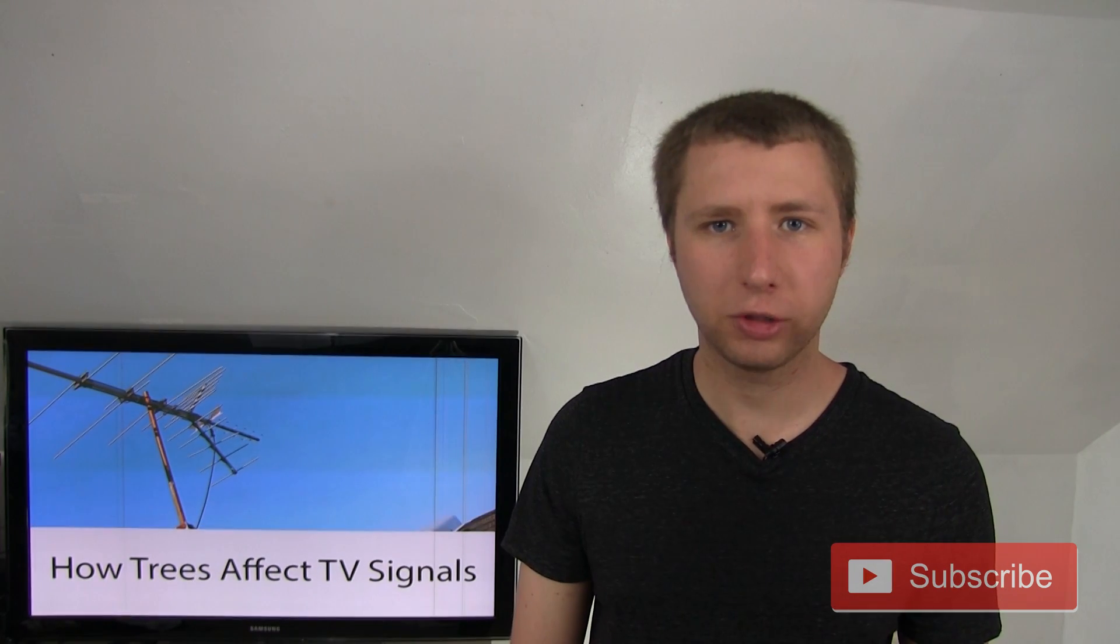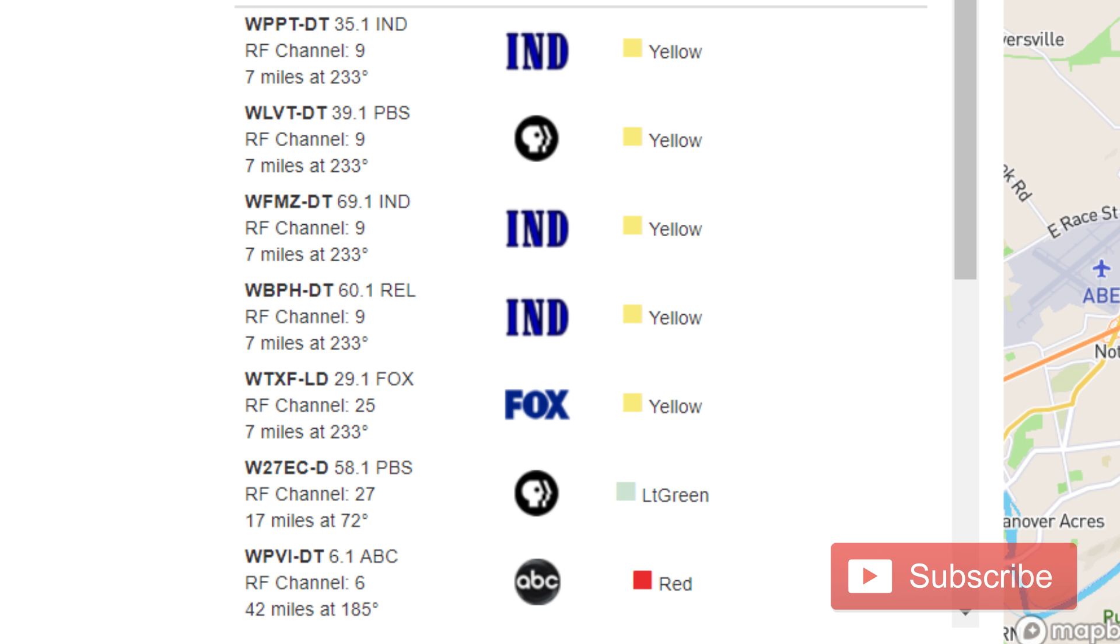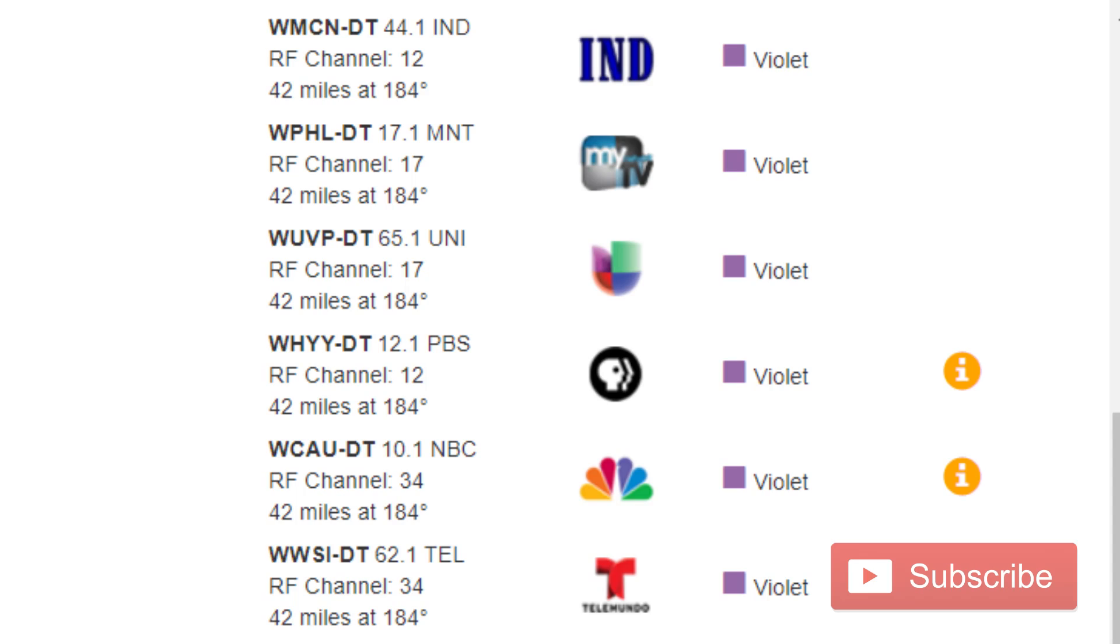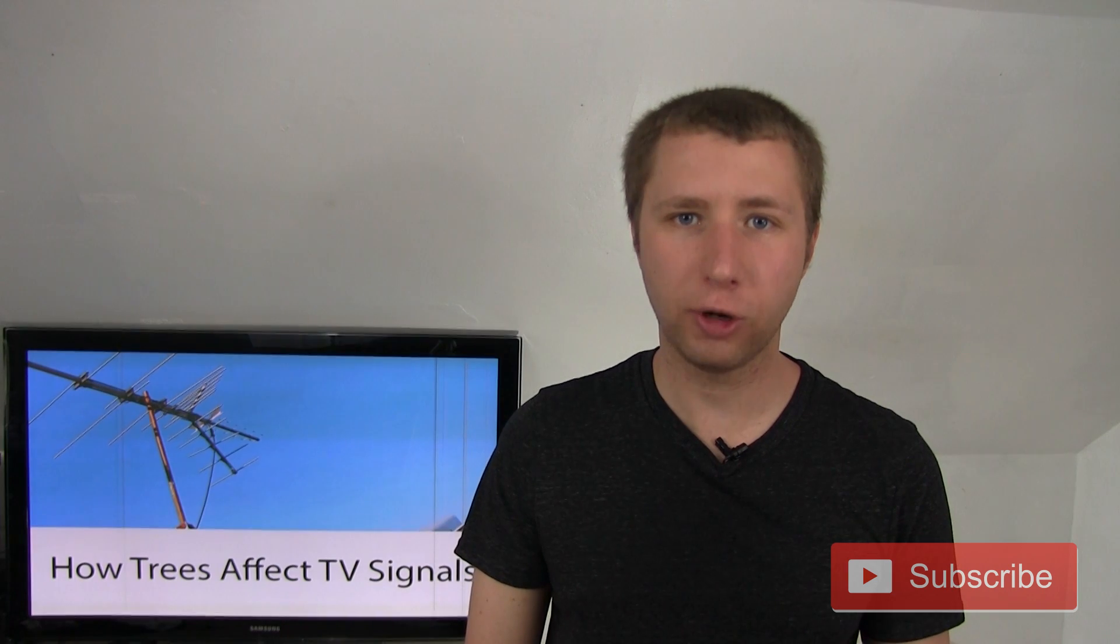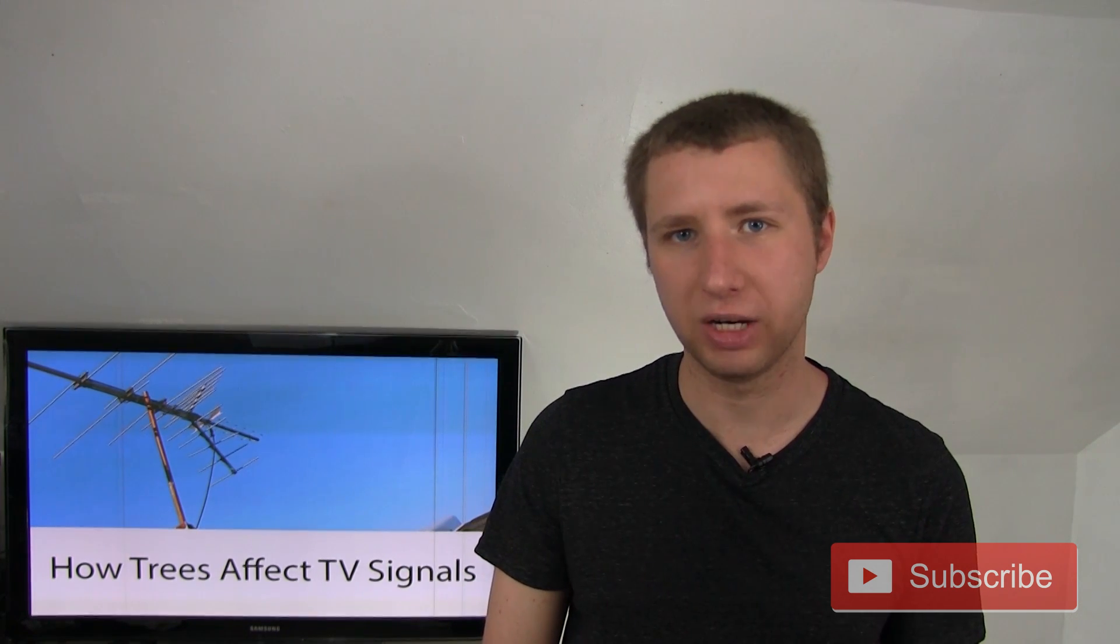Now, to determine how strong the signals are in your area, is to go to antennaweb.org and type in your address. If you see yellow, green, and just a few red signals, those signals are typically strong enough to overcome the interference and changing signal paths from trees blowing in the wind. But if you see purple and blue signals, those are very weak signals. And typically, if you have a lot of trees and even a forest in your backyard, there's a good chance that you won't really have any reception on very windy days.